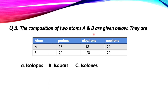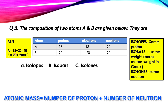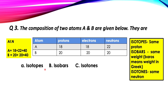For the last question, the composition of two atoms A and B is given. Checking isotopes: protons are different, and neutrons are also different, so not isotopes. No possibility for isotones either. Checking for isobars: for atom A, 18 protons plus 22 neutrons equals 40. For atom B, 20 plus 20 also equals 40. They have the same mass number, so A and B are isobars.